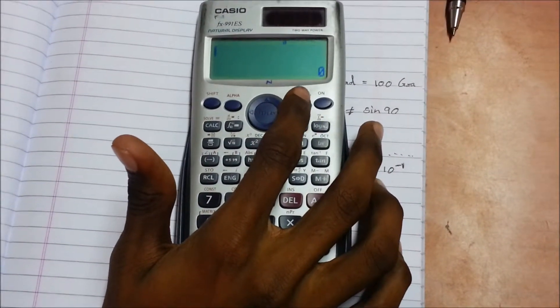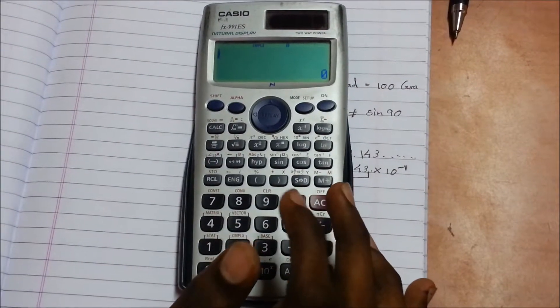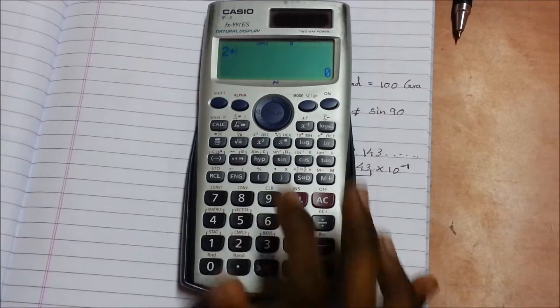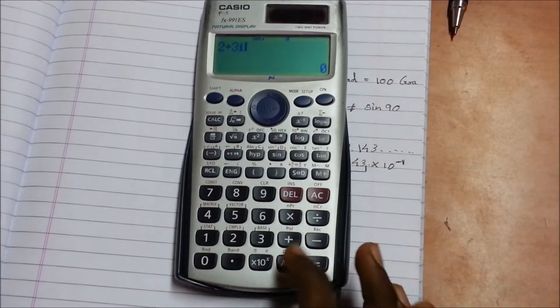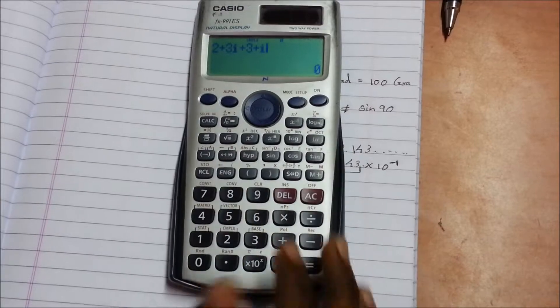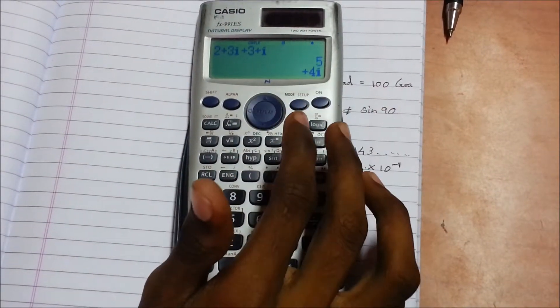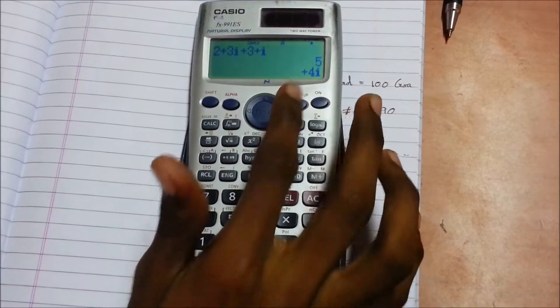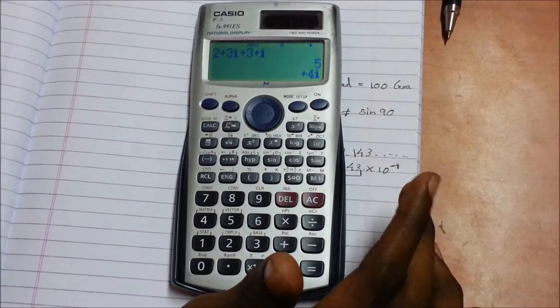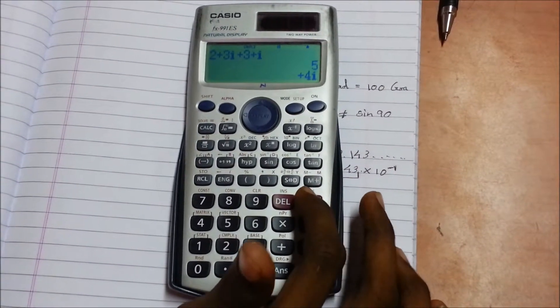Let's try an example: 2 plus 3i plus 3 plus i. It shows the answer in rectangular format, that is 5 plus 4i. 5 plus 4i is called the rectangular format.